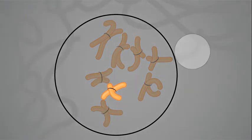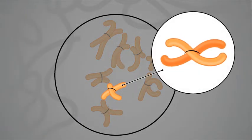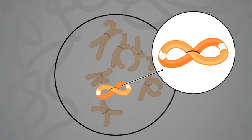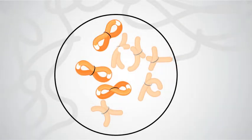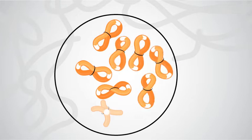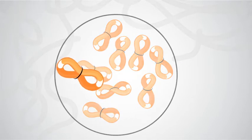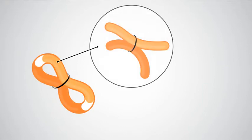Fragmented loci are then biotinylated and ligated, creating chimeric junctions between adjacent sequences. This process is called proximity ligation. Any two sequences that create a junction must have originated within the same cell.